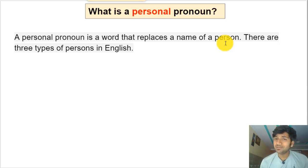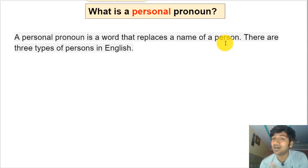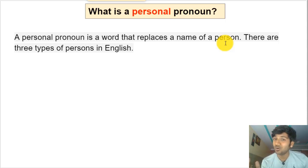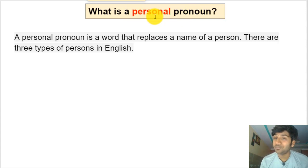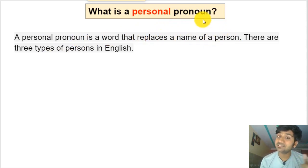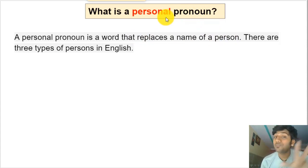Let's understand what a personal pronoun is. First, let's understand what a pronoun is. A pronoun is a word that replaces a noun — a word used in place of a noun. That's why it is called a pronoun. Now, a personal pronoun is a word that is used in place of the name of a person. It replaces the name of a person.